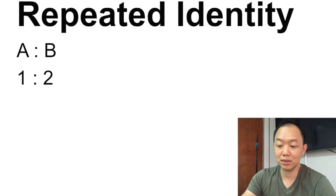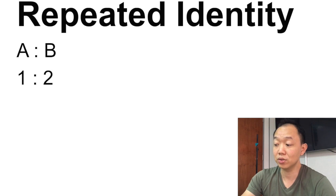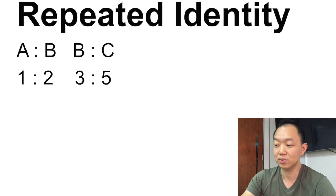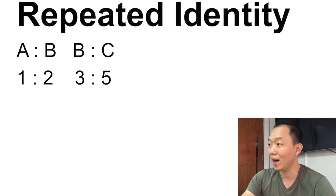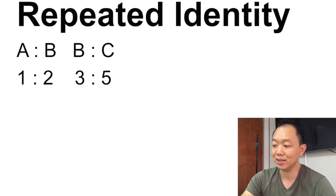The next type of heuristic is called repeated identity. So what is repeated identity? If you look at the ratio, we have A to B as 1 to 2, and the ratio B to C as 3 to 5. Usually in repeated identity, there's one fellow that is being repeated. In this particular case, can you tell me which fellow is repeated?